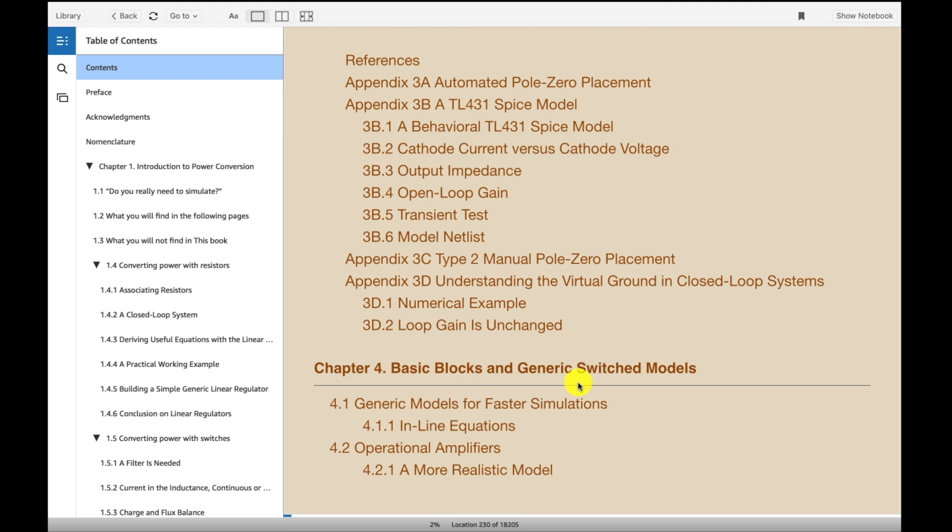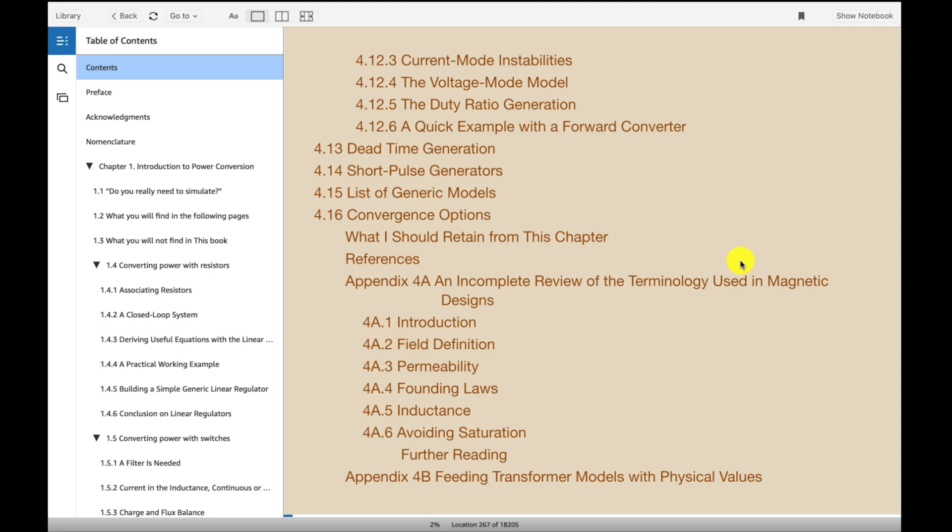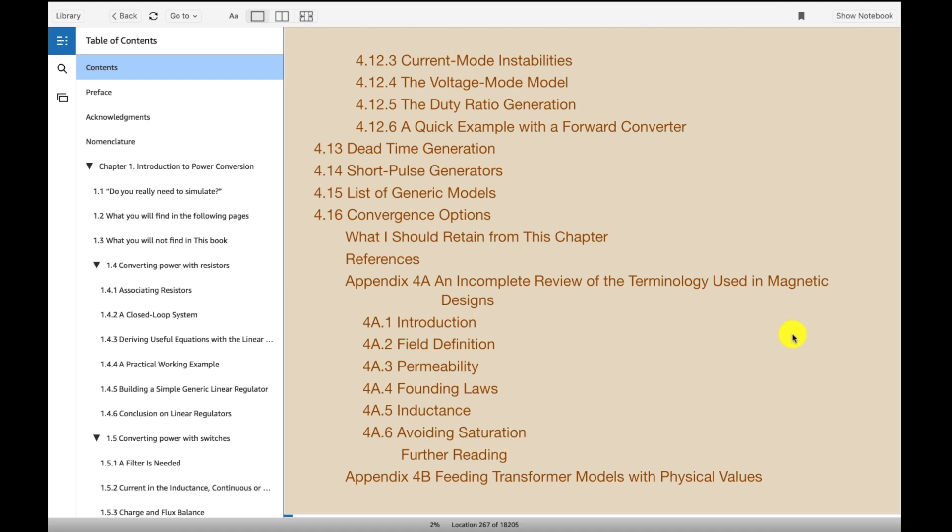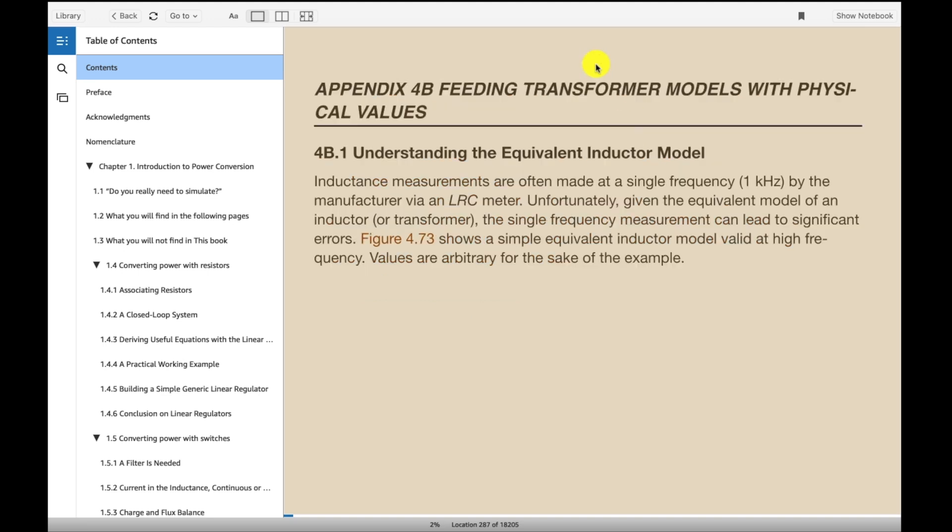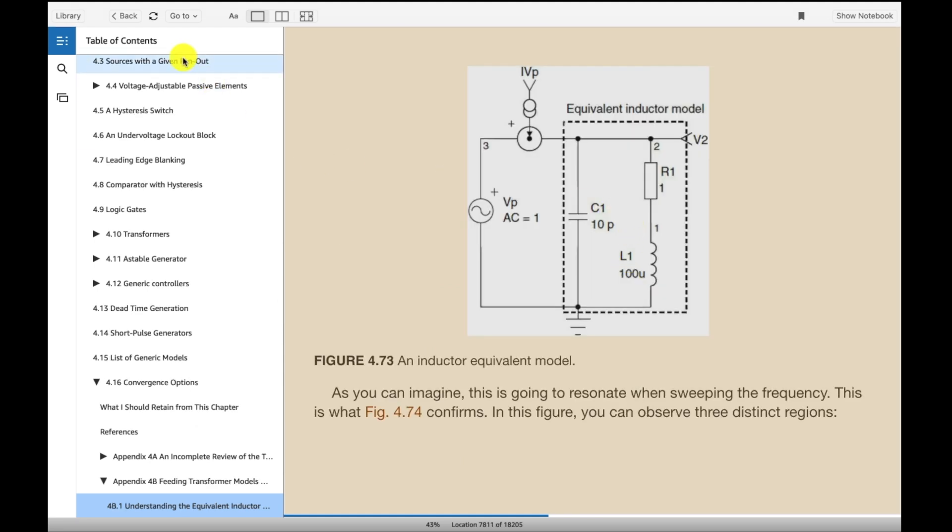Okay, then Chapter 4, Basic Blocks and Generic Switch Models. So you can just see how in depth this book is. Leading edge blanking. There's a lot of subjects. We're going to cover a whole bunch of these things, but geez, it's just really in depth. Chapter 4 goes down to convergence. And you can see all the things, avoiding saturation. Then back into the appendix in this one, equivalent inductor model. We can just jump over and take a look at that real quick. And there you go.